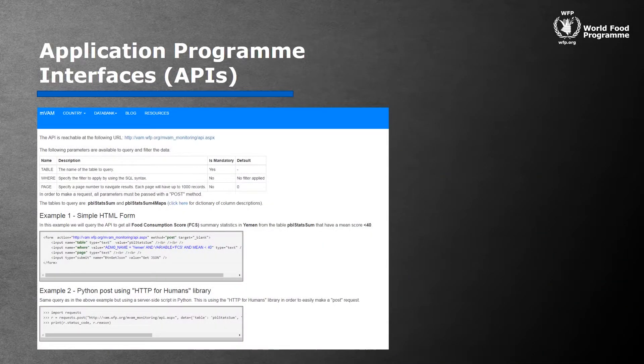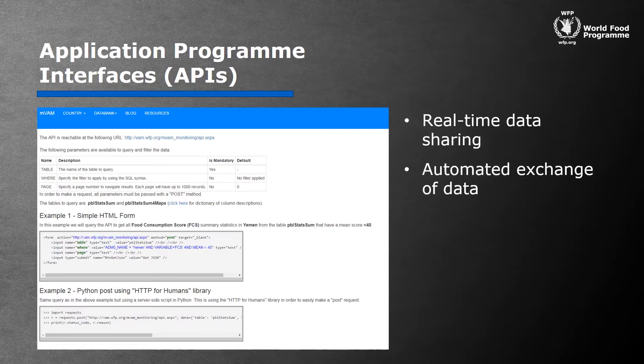Finally, our APIs allow us to share data openly far and wide with WFP and actors outside. Our APIs automate the exchange of data with no human intervention. Currently, numerous organizations such as the World Bank, other UN organizations, NGOs, and universities use our APIs to download our data.